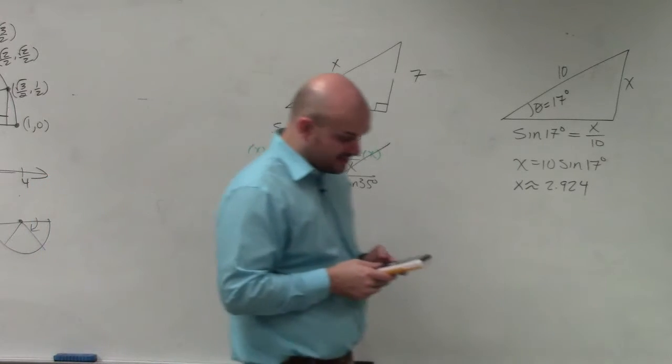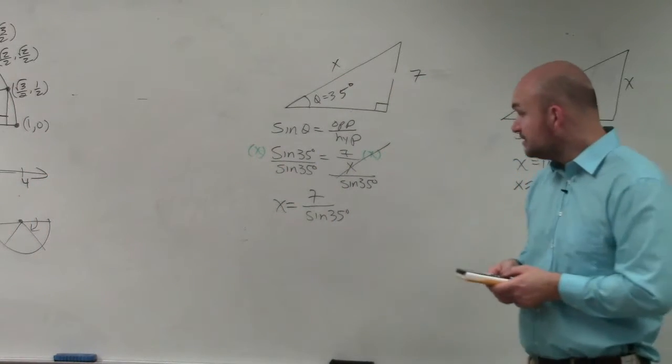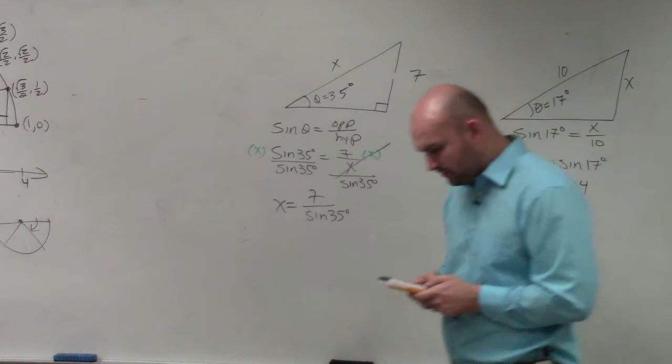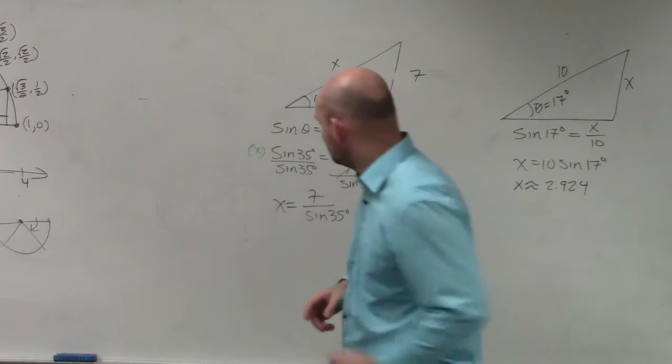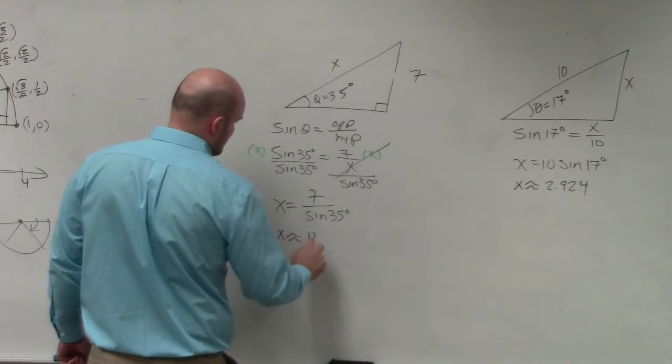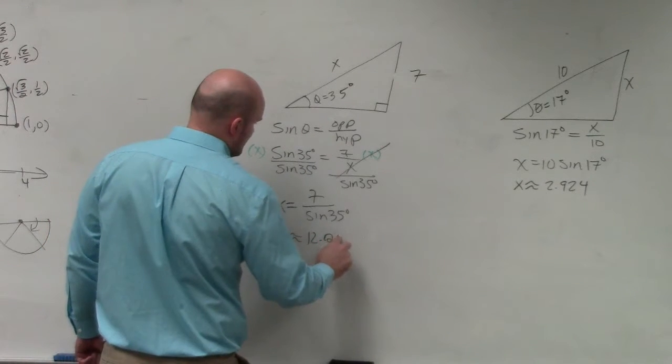So my calculator, and you should get the same answer, would be 7 divided by the sine of 35. And I'm getting 12.204. So x is approximately 12.204.